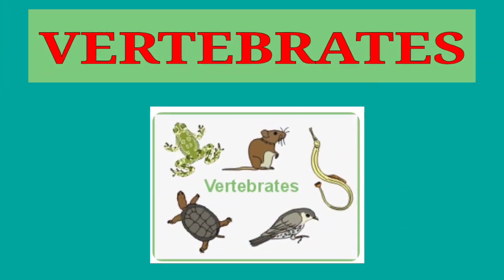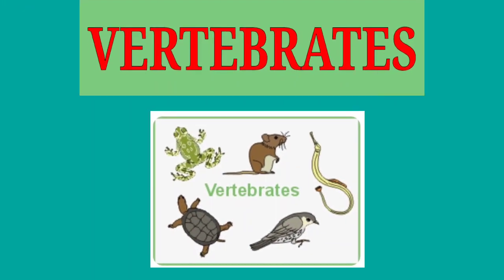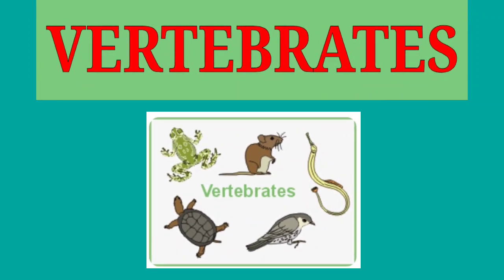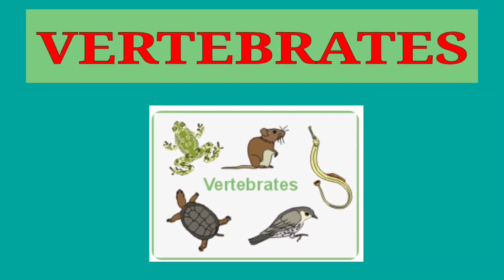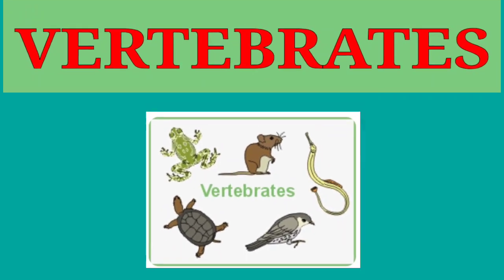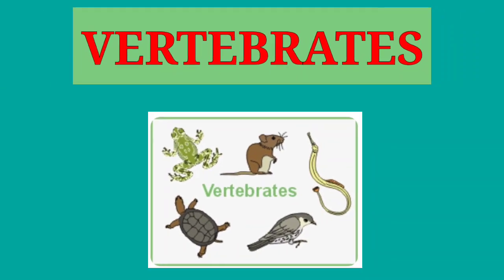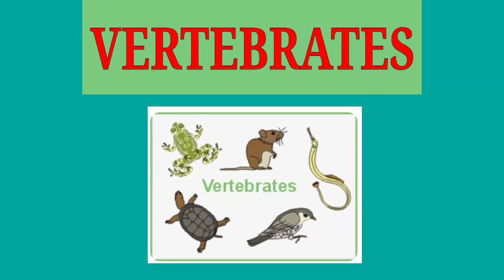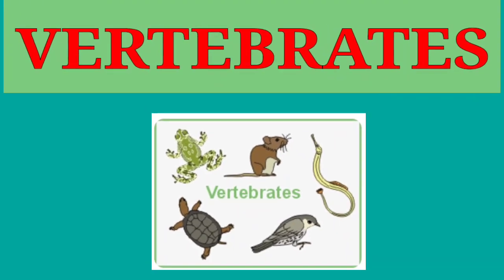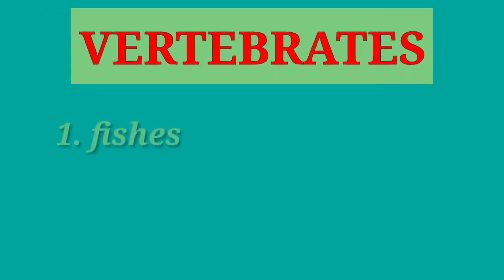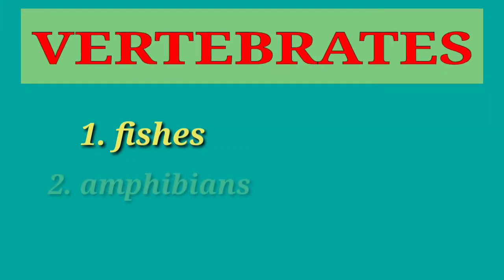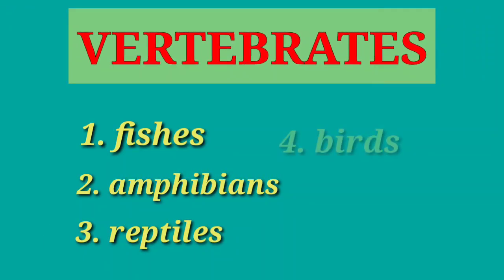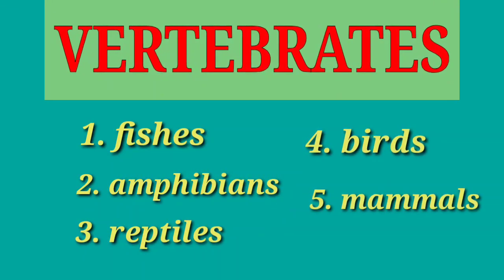Let us talk about vertebrates. They are classified into five groups according to their similarities in body structure. These five groups are the fishes, amphibians, reptiles, birds, and mammals.